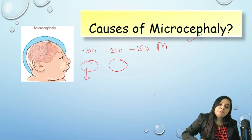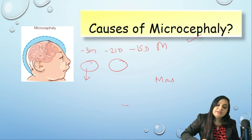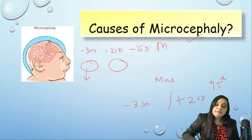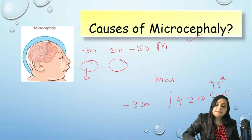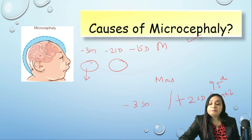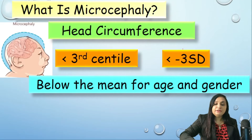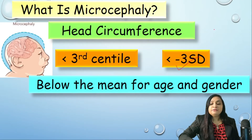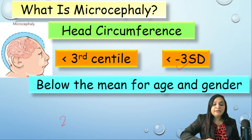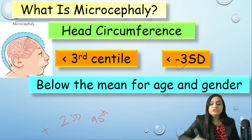Similarly, what is macrocephaly? Here there is a twist — it is not three standard deviations, it is plus two standard deviations, which corresponds to the 95th centile. So remember: for microcephaly it is minus three SD, and for macrocephaly it is plus two SD and 95th centile. Pay attention — this is a very important question.